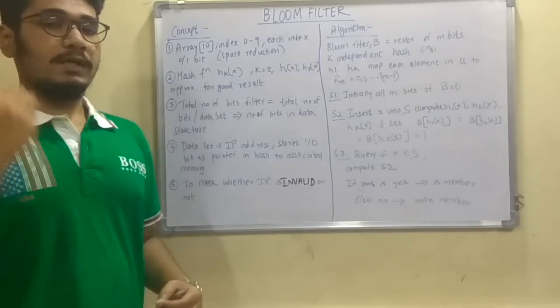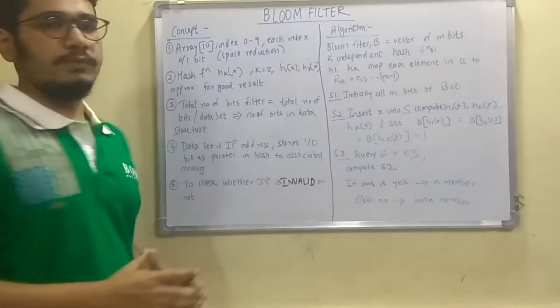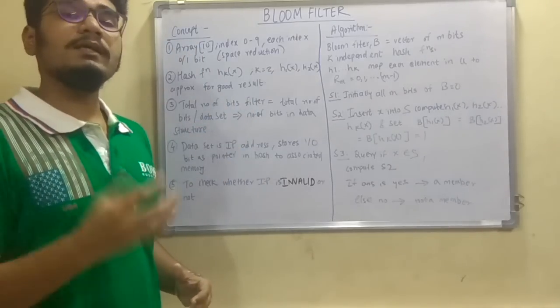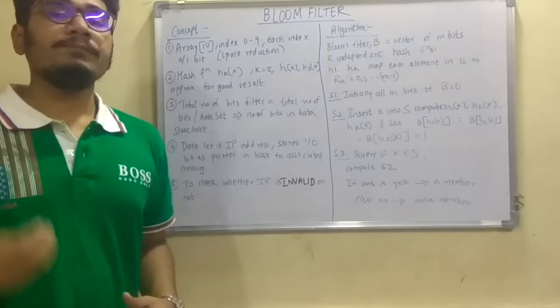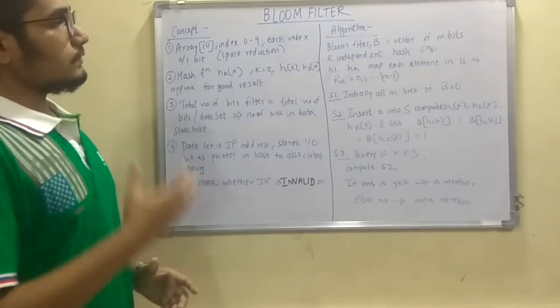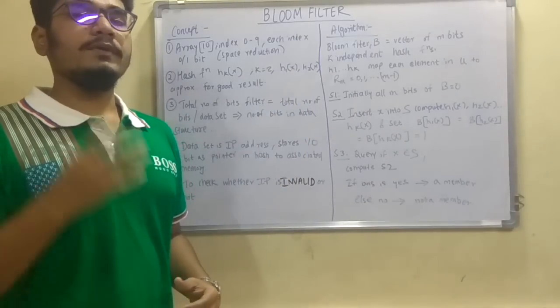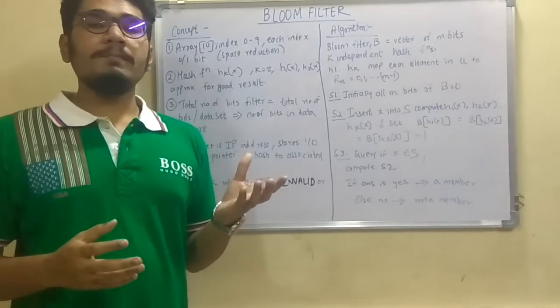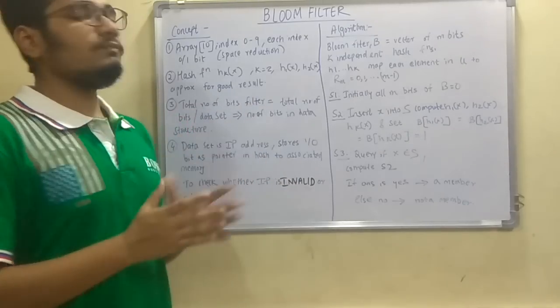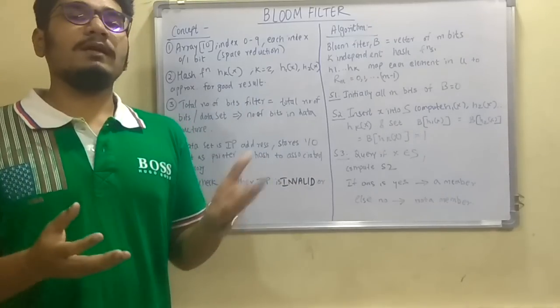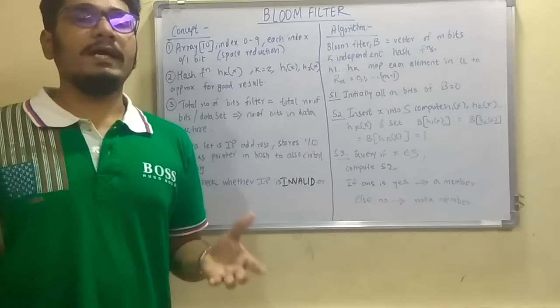So this is the basic idea of this bloom filter concept. I'll discuss regarding the applications and example of bloom filter later. So let us move on to the algorithm of this. So in this bloom filter we basically make use of a bloom and a hash function. So by the name, that is bloom filter, it came from this that is a bloom, a vector will be there and a hash function will be there.